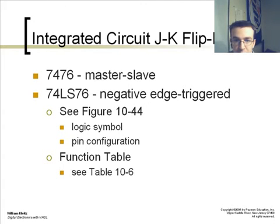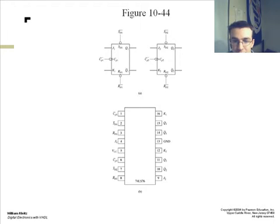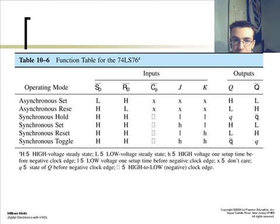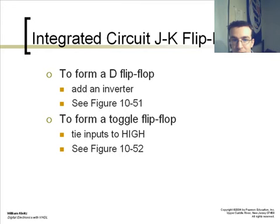An integrated circuit form of the J and K flip-flop would be your 7476, your 74LS76. These are diagrams of those. And your function table again, your set, reset, and hold, and toggle modes all combined.